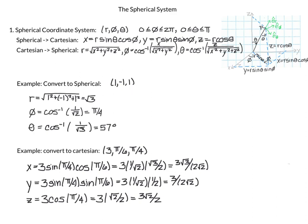Using our formulas to go from Cartesian to spherical: r equals the square root of the sum of squares, so √(1² + (-1)² + 1²) = √3. Phi equals arccos(x / √(x² + y²)) = arccos(1 / √2) = π/4. And theta equals arccos(z / r) = arccos(1 / √3), which is approximately 57 degrees.